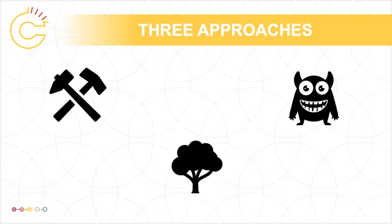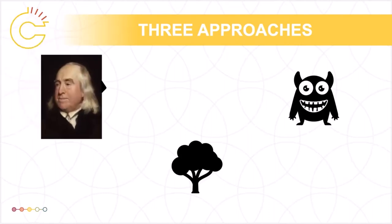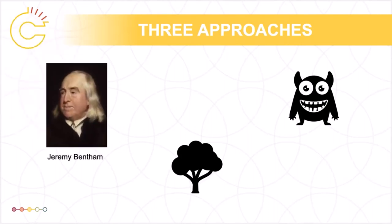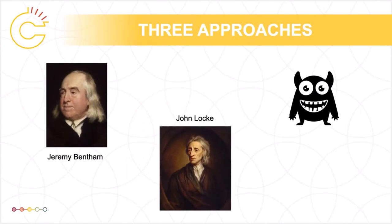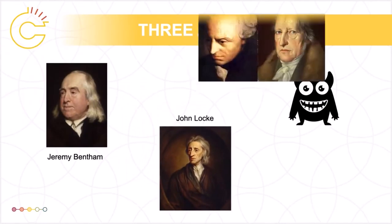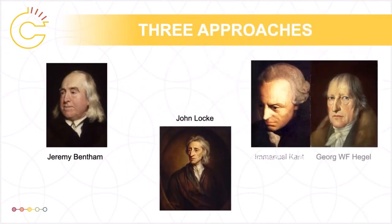Each approach to the argument for copyright is connected to the writings of one or two major philosophers. The utilitarian approach draws from the work of Bentham, the natural rights approach is developed from the writings of Locke, and the personality-based approach comes from the works of Kant and Hegel.